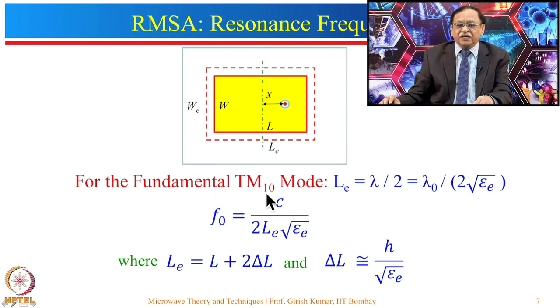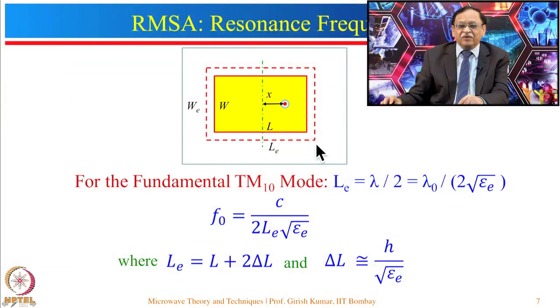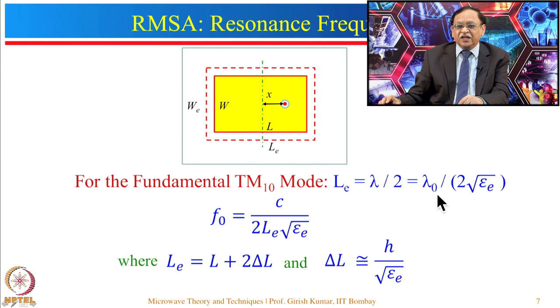For the fundamental TM10 mode, the subscript '1' implies a one-half wavelength variation along the length, and '0' implies no variation along the width. Recalling the dipole antenna, the effective length should be lambda/2. Here also, the effective length of the rectangular patch L_e should equal lambda/2, but since it is printed on a substrate, lambda = lambda_0 divided by sqrt(epsilon_e).